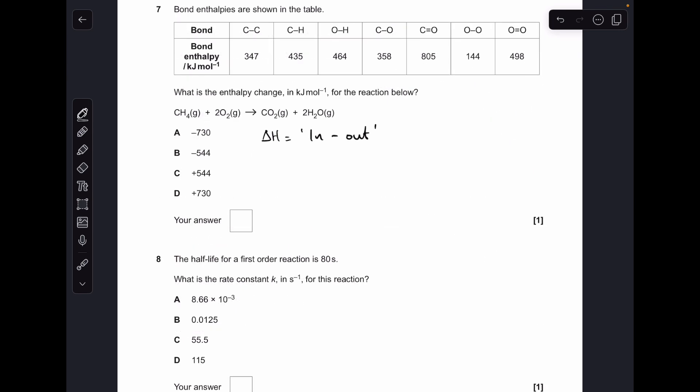Moving on to number 7. We've got a table full of bond enthalpies. I call this an in minus out calculation. First, we don't need all the bonds in the table. We don't need the C-C single bond, nor the C-O single, nor the O-O single. The delta H, the enthalpy change for the reaction, is calculated by calculating the sum of energy that has to go in to break all the bonds in the reactants, then subtract the energy you get out when you make the bonds in the products. When you put the numbers in your calculator, you should have got option A, minus 730.